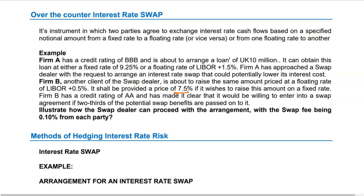The fixed and floating rates of both Party A and Party B are given. Firm B has a credit rating of AA and has made it clear that it would be willing to enter into a swap agreement only if two-thirds of the potential swap benefits are passed on to it. The swap dealer's fee is 0.1% from each party.